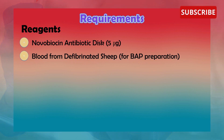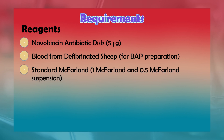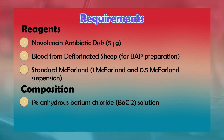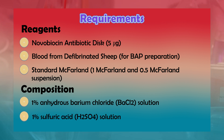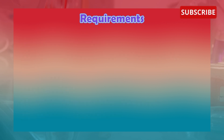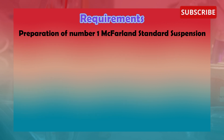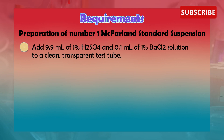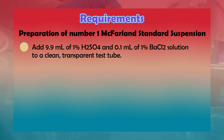Reagents required are: a novobiocin antibiotic disc of 5 micrograms, defibrinated sheep blood for blood agar plate preparation, and standard McFarland 1 and 0.5 McFarland suspensions. The McFarland suspension is composed of 1% anhydrous barium chloride solution and 1% sulfuric acid solution. For preparation of the 1 McFarland standard suspension, add 9.9 ml of 1% sulfuric acid and 0.1 ml of 1% barium chloride solution to a clean transparent test tube.